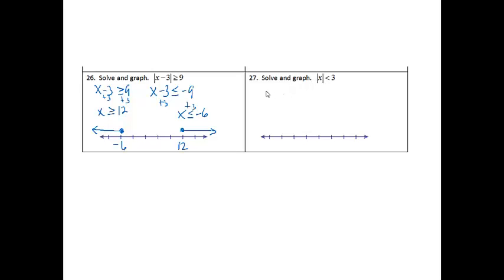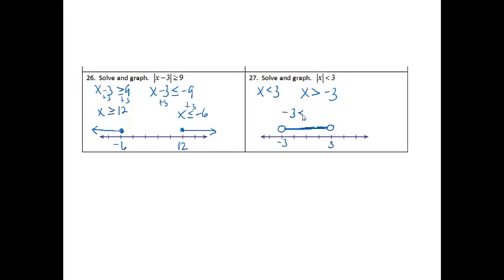Problem 27 also asks me to solve and graph. I'm going to have two separate inequalities: x is less than 3, and x is greater than negative 3. No solving to do, I'm just ready to graph. Negative 3 goes on the left side, 3 goes on the right. They will both get open circles because there's no equal sign. Less than 3 goes to the left, greater than negative 3 goes to the right, so they connect in the middle. Another way to write that would be negative 3 is less than x, which is less than 3.